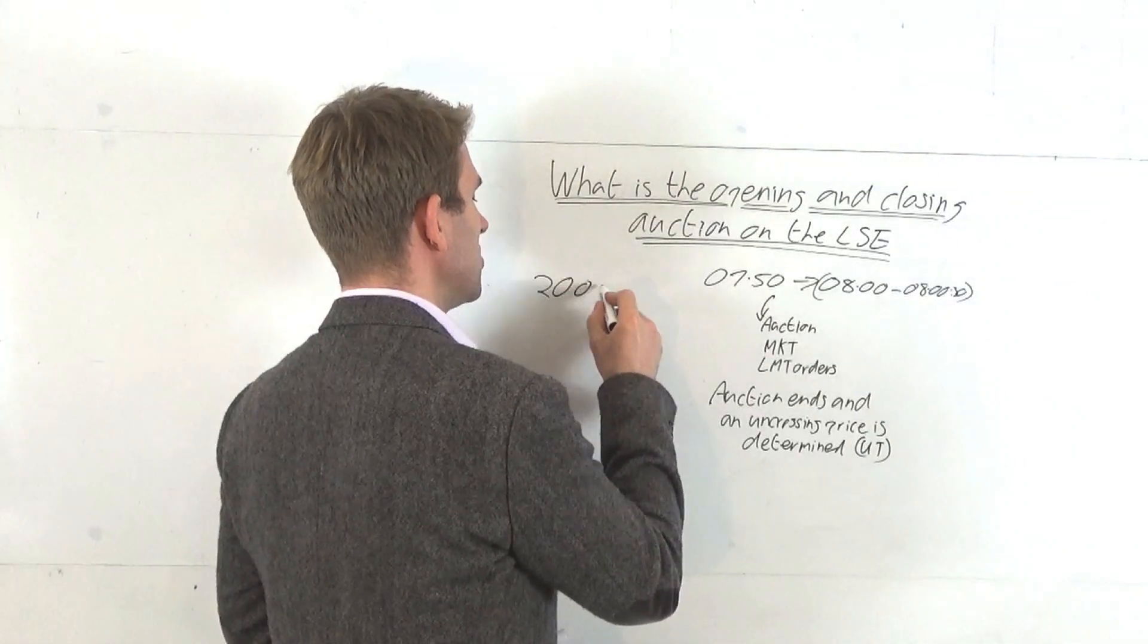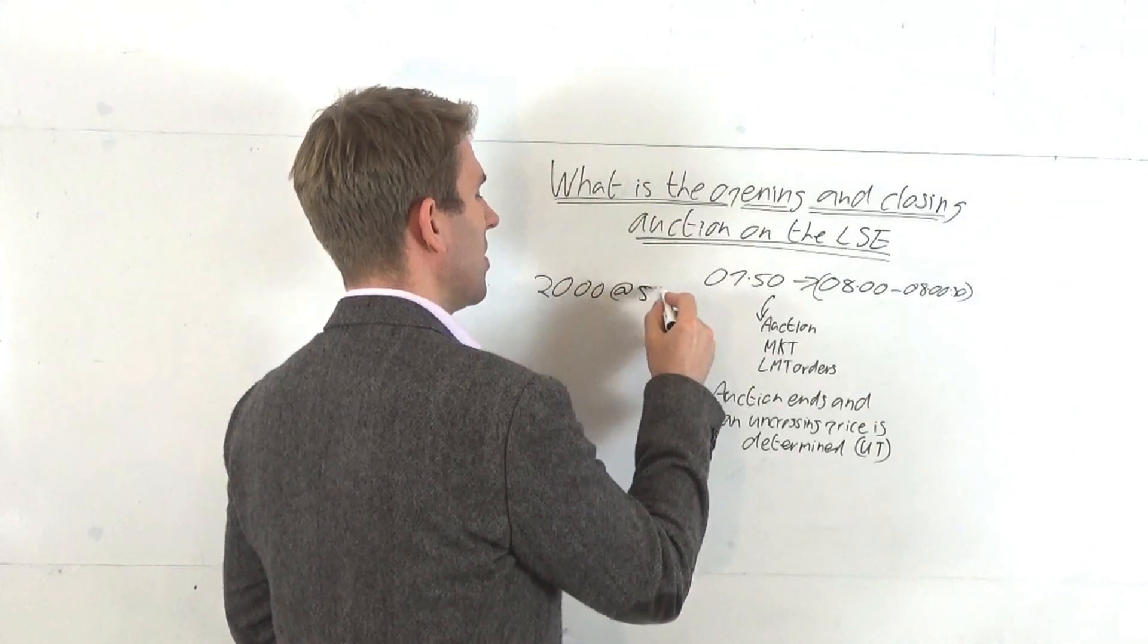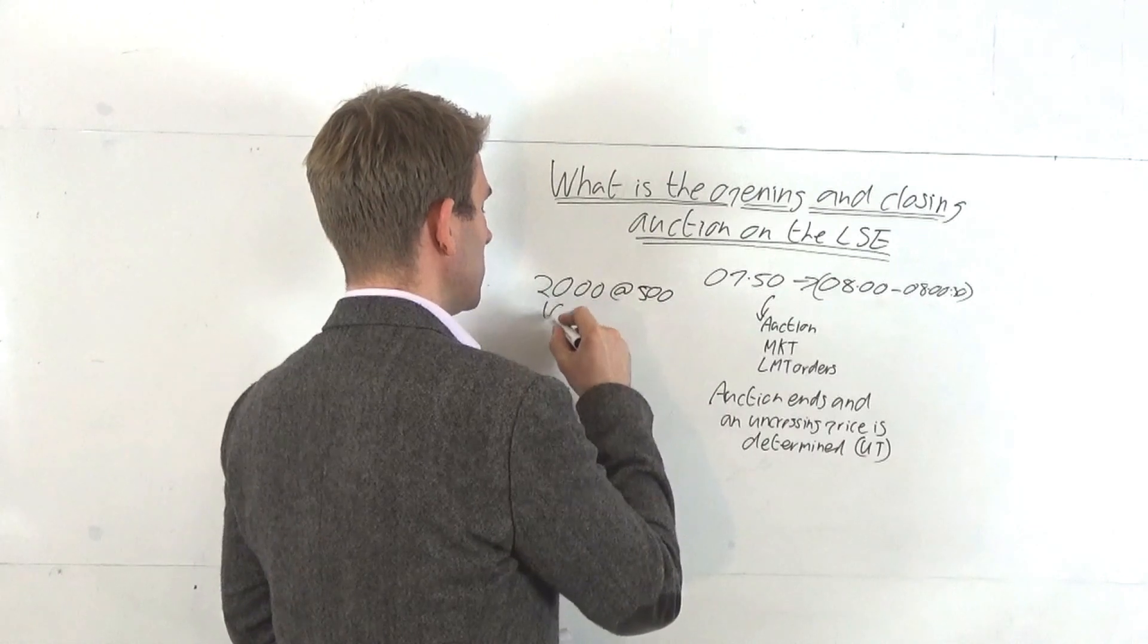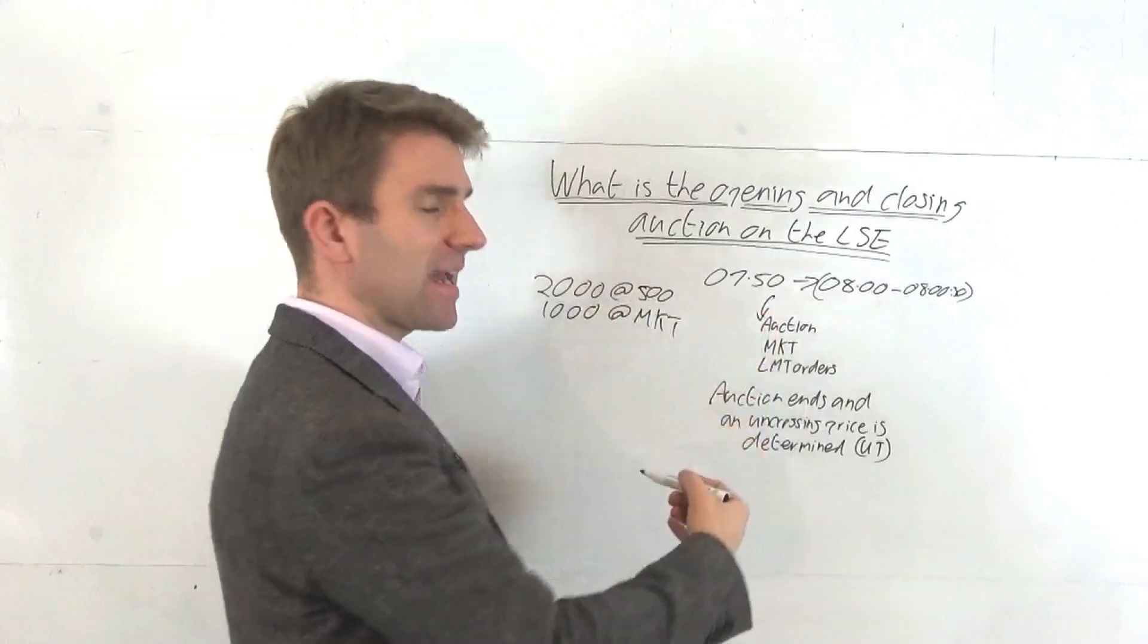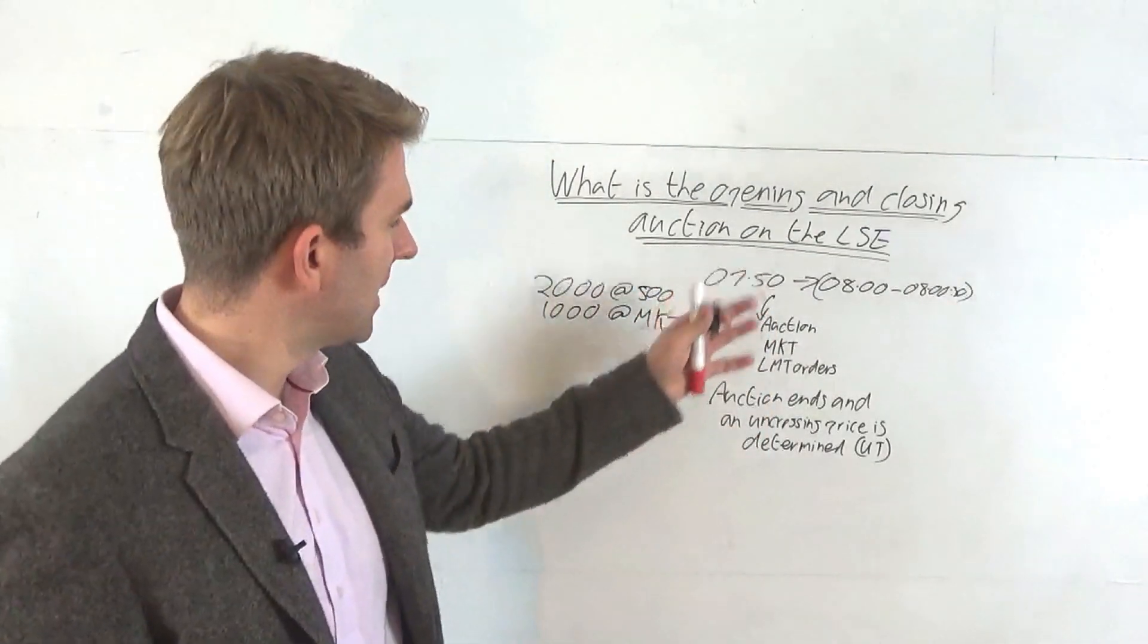For example, someone wants to buy 2,000 shares at 500 - that would be a limit order. If they want to buy 1,000 shares at market, it would look like MKT. You see these stacking up in the order book on the bid side and on the offer side.